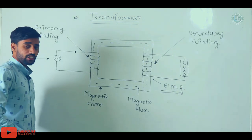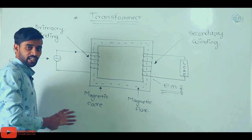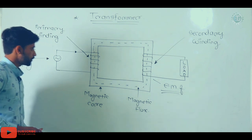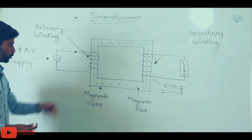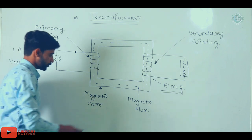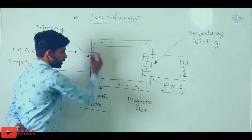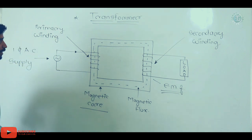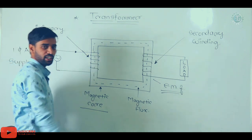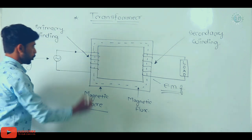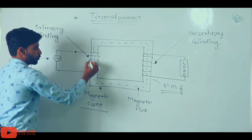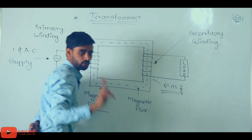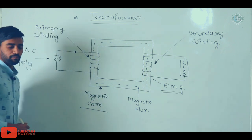So guys, we can see the circuit diagram of the transformer here. You can see the magnetic core, and there is a primary winding and secondary winding. The magnetic core links the primary and secondary sides. We can see the transformer diagram here.